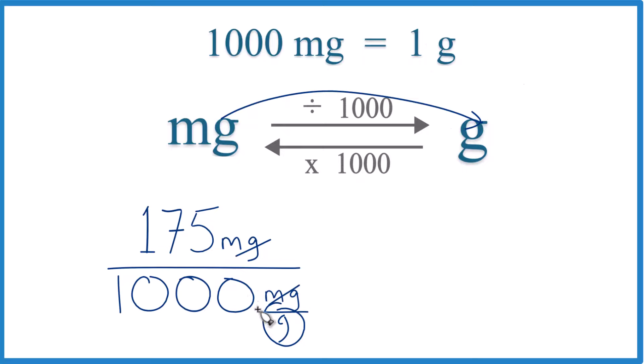So why don't we move the decimal point 1, 2, 3, and now we're just dividing by 1 up here. 1, 2, 3, and 175 milligrams, that equals 0.175 grams.